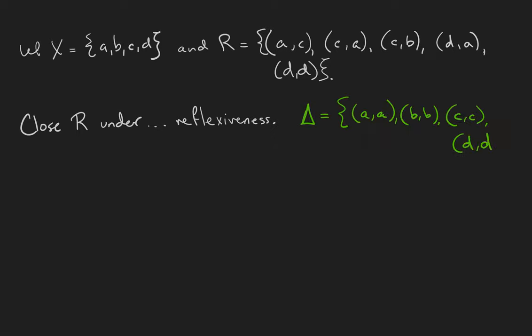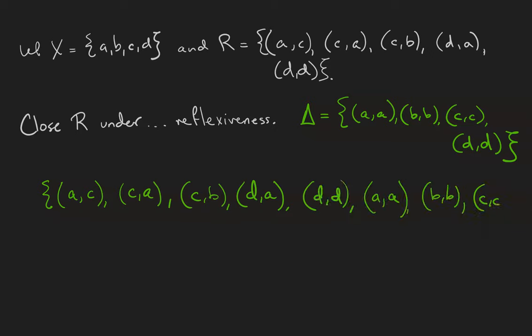DD is here too, but it's less interesting because we already have it. So the closure of R under reflexiveness is the relation that contains all the original data of R, as well as the necessary pairs for reflexiveness. Notice that the reflexive closure is R union delta.